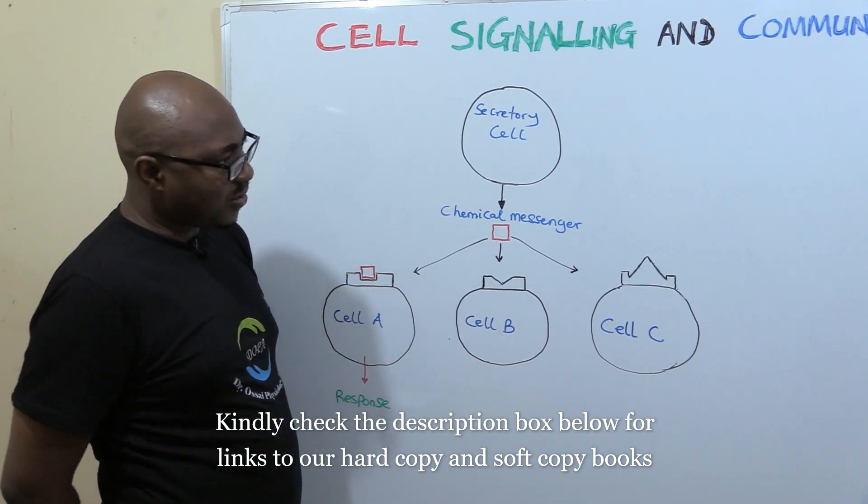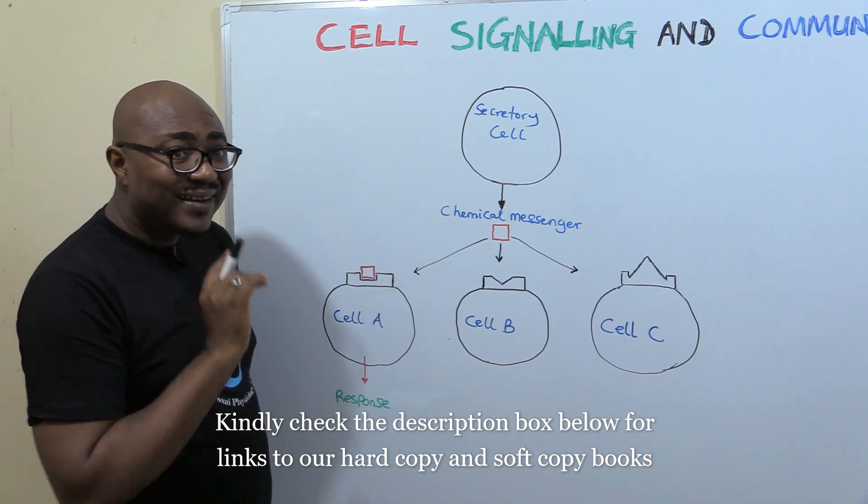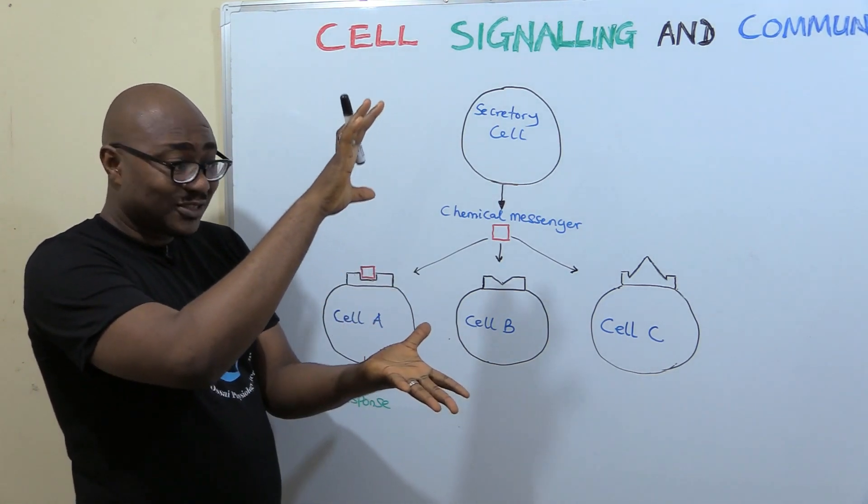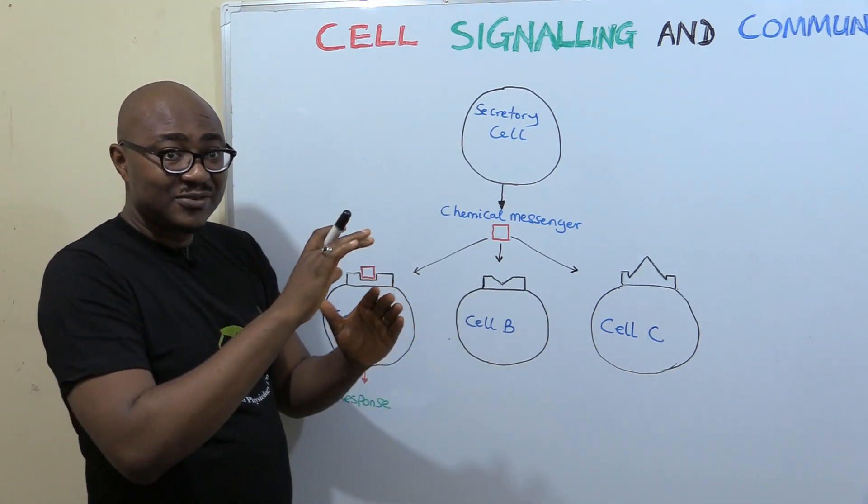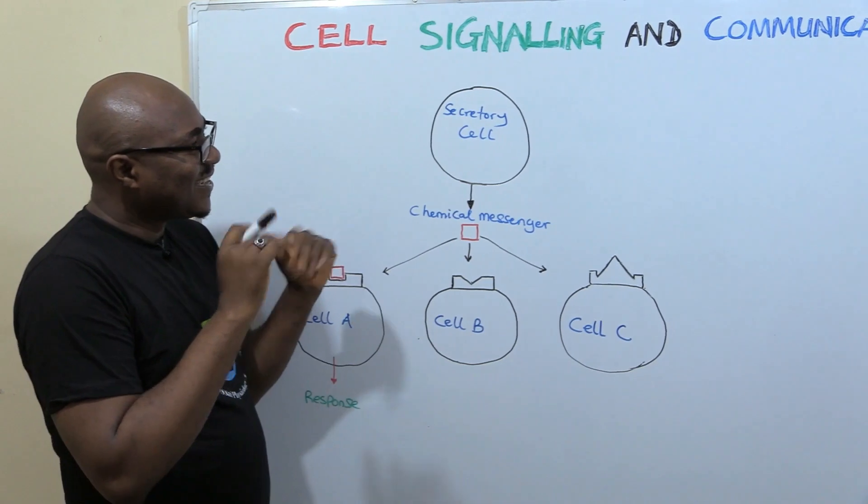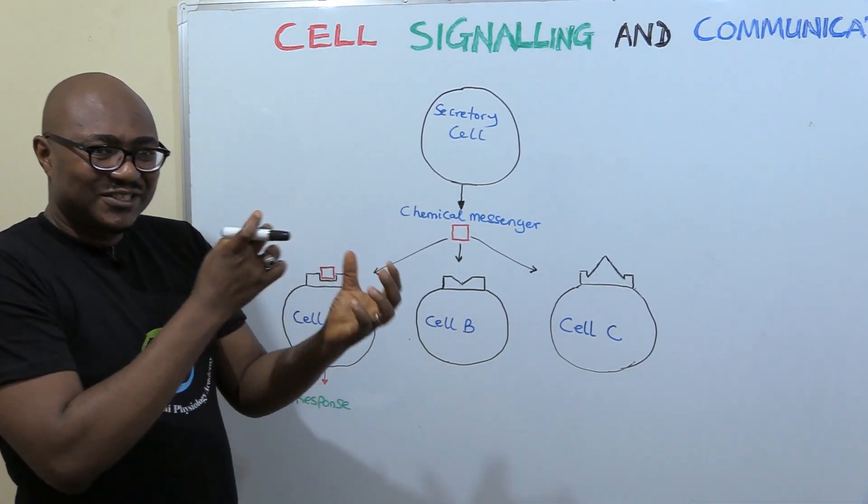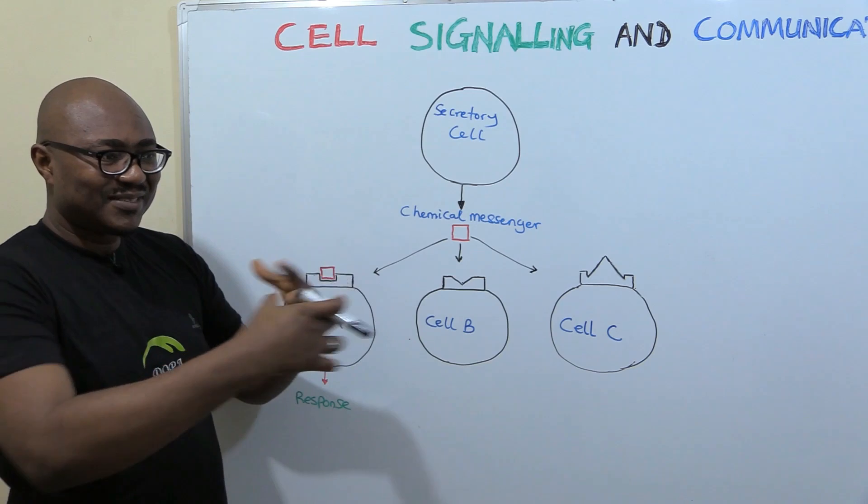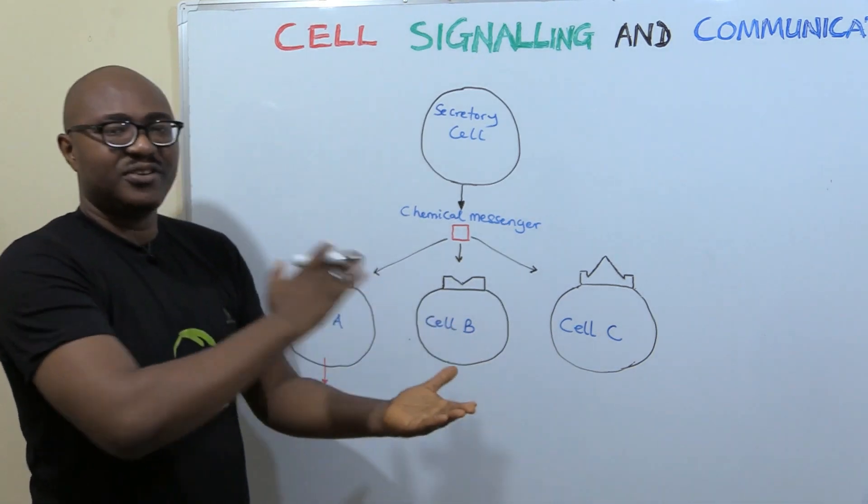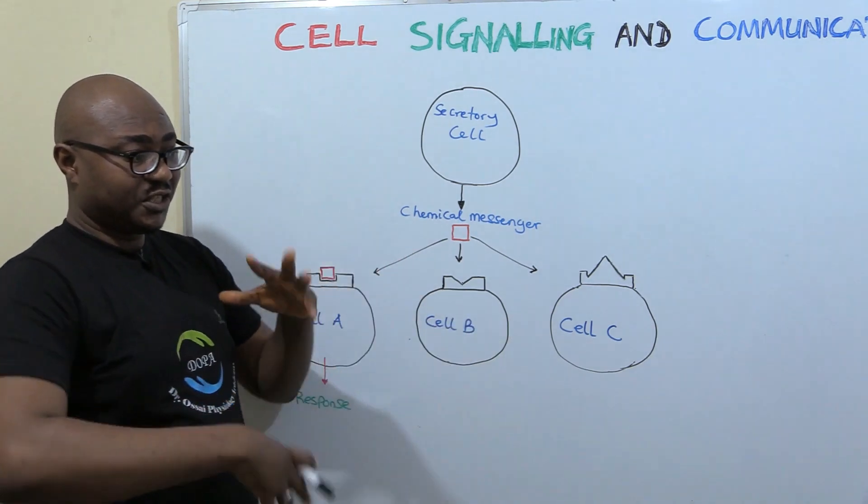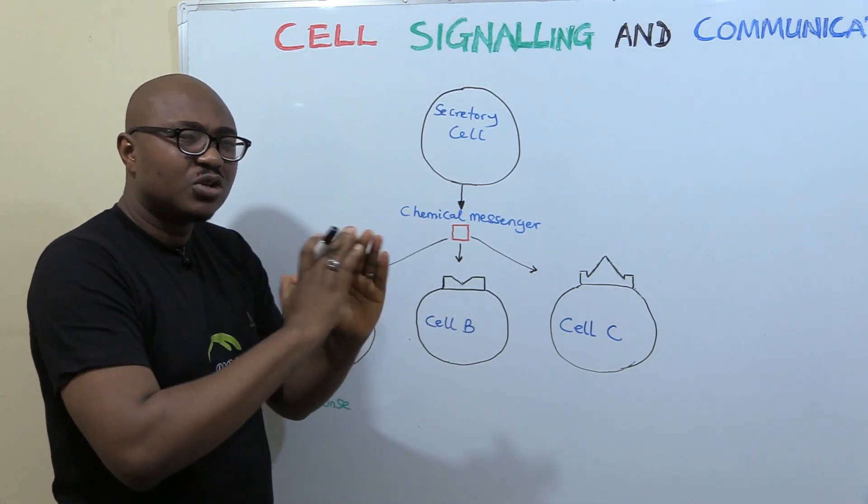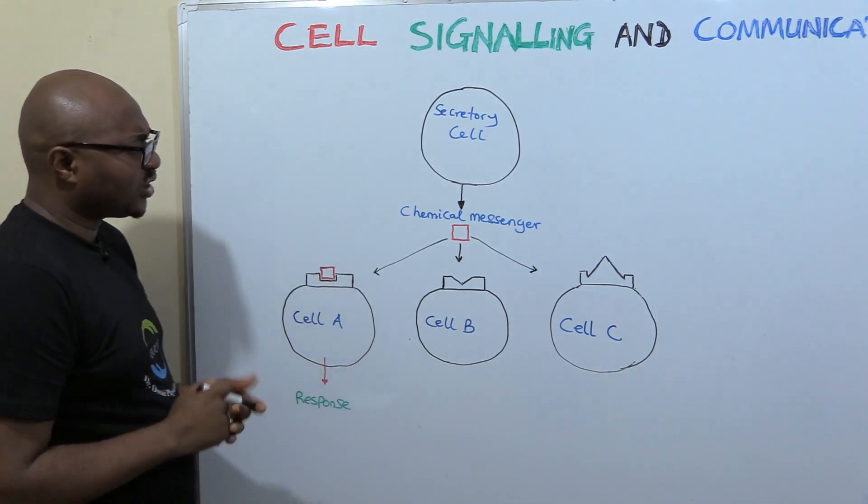Remember, one of the underlying principles we talked about in the introductory lectures, we called them Seven Secrets of Physiology. Now one of them states that communication between cells, between tissues, between organs is necessary for the integration and coordination of physiological processes. Now it's very logical.